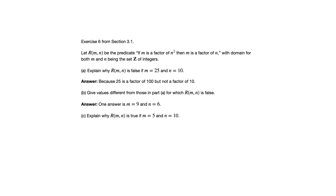Part C says explain why R(M,N) is true if M equals 5 and N equals 10. If M equals 5 and N equals 10, then the statement becomes if 5 is a factor of 100, then 5 is a factor of 10. 5 is a factor of both 100 and 10, so that makes that conditional statement true.